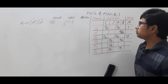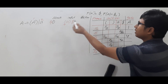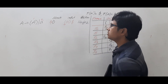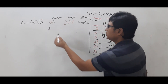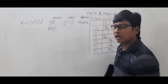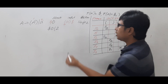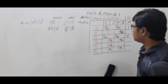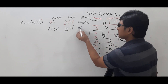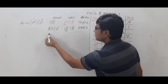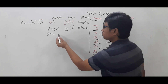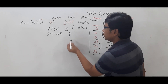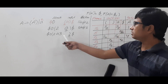I0 on open braces → S2, so action is shift 2. Push '(' and state 2 onto the stack. Input pointer now points to 'a'. I2 on 'a' → S3, so action is shift 3. Push 'a' and state 3 onto the stack. Input pointer now points to closed braces.